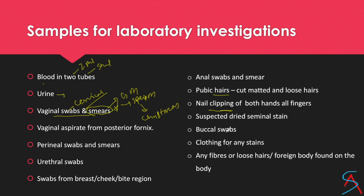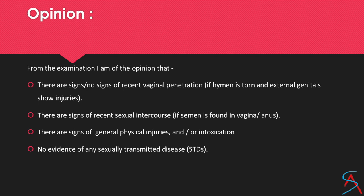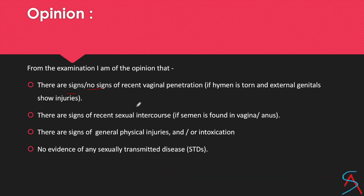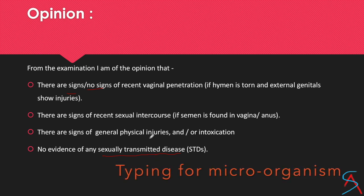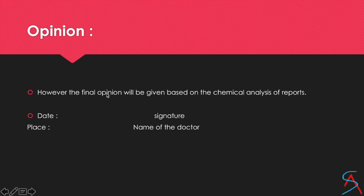Collect the clothing for any stains, fibers, or foreign material. All marked samples must be labeled, sealed, and handed over. Then write your opinion: 'From the examination, I am of the opinion that there are signs or no signs of recent vaginal penetration.' Look for hymen tears, external genital injuries, or signs of recent sexual intercourse — if semen was found, or if there are physical injuries, intoxication, or signs of sexually transmitted disease, mention all findings. STDs are important because typing can match strains found in both the accused and the victim. You may add that the final opinion will be given based on laboratory analysis of the submitted samples.